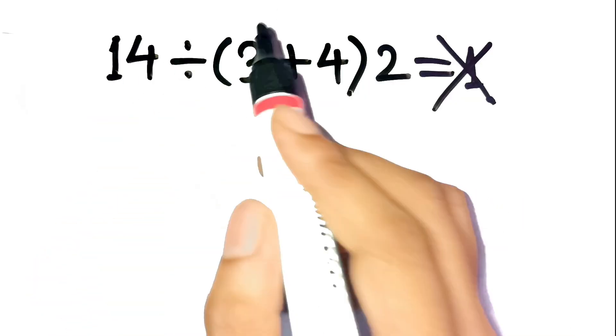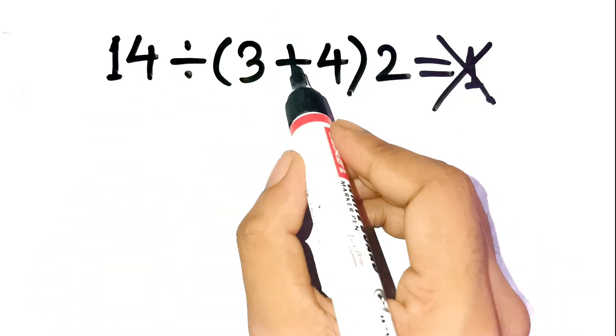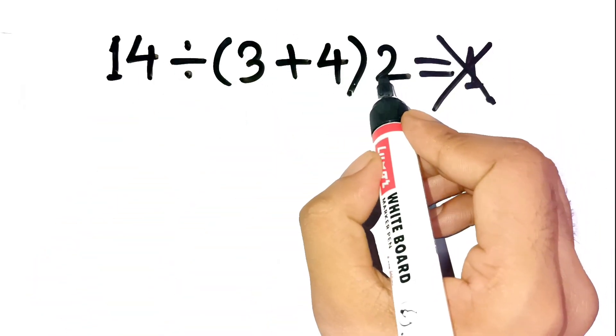The problem is 14 divided by open parentheses, 3 plus 4, close parentheses, then times 2.